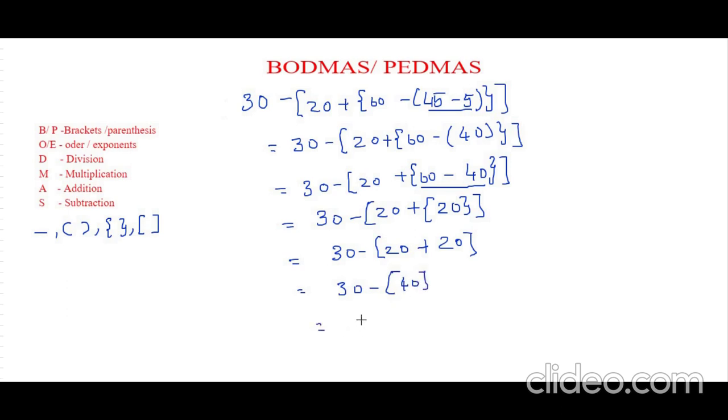Which is equal to, now let's remove the square bracket. 30 minus 40, which is minus 10.